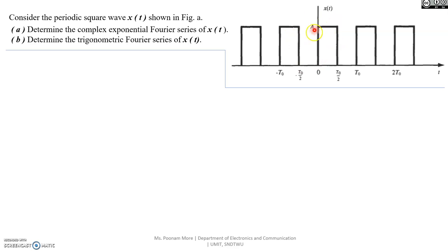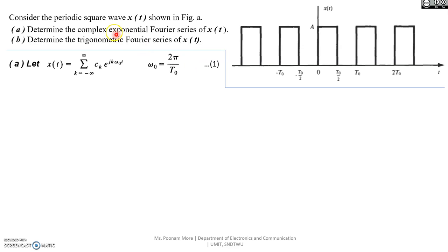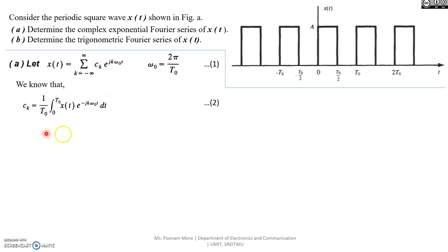Let's consider a problem where we are supposed to represent the given signal x(t), which is a periodic square wave signal, in the complex exponential Fourier series form and the trigonometric Fourier series form. For the complex exponential Fourier series, we evaluate ck by integrating x(t) times e raised to minus jk omega_0 t multiplied by 1 by T0 over a single time period.